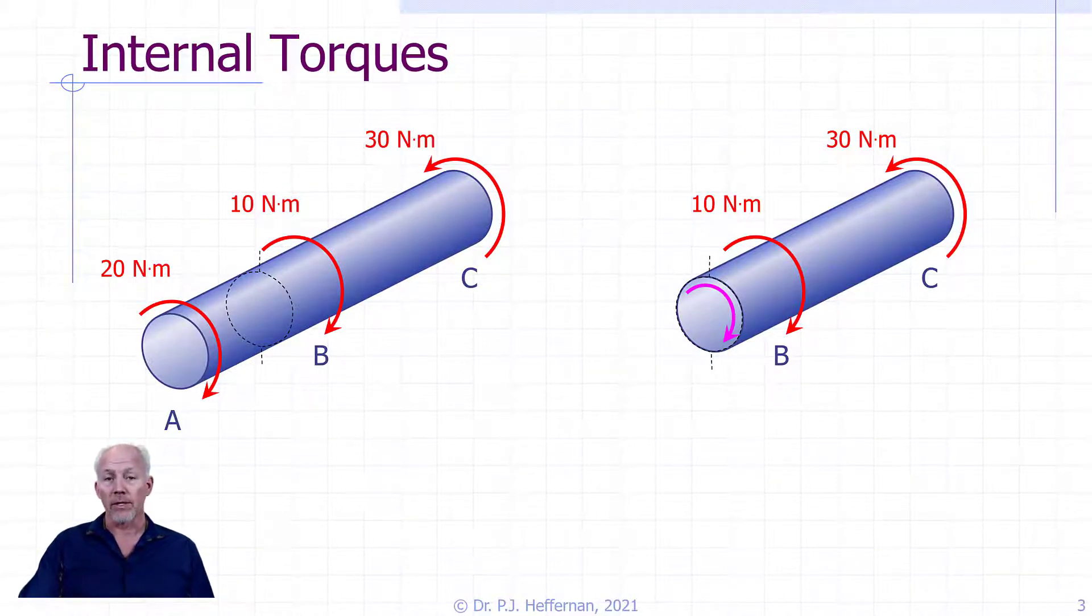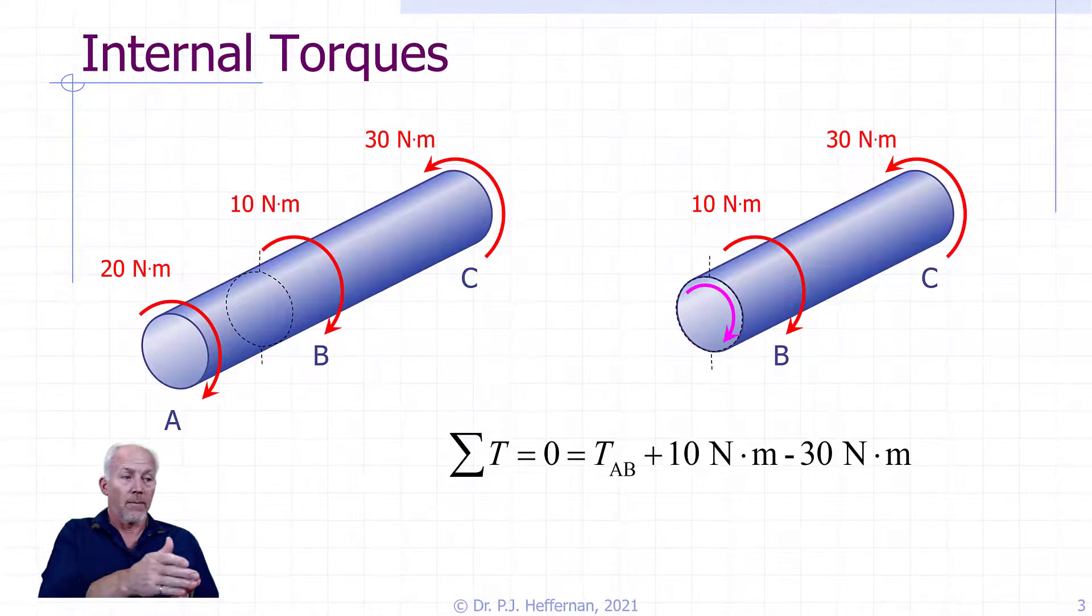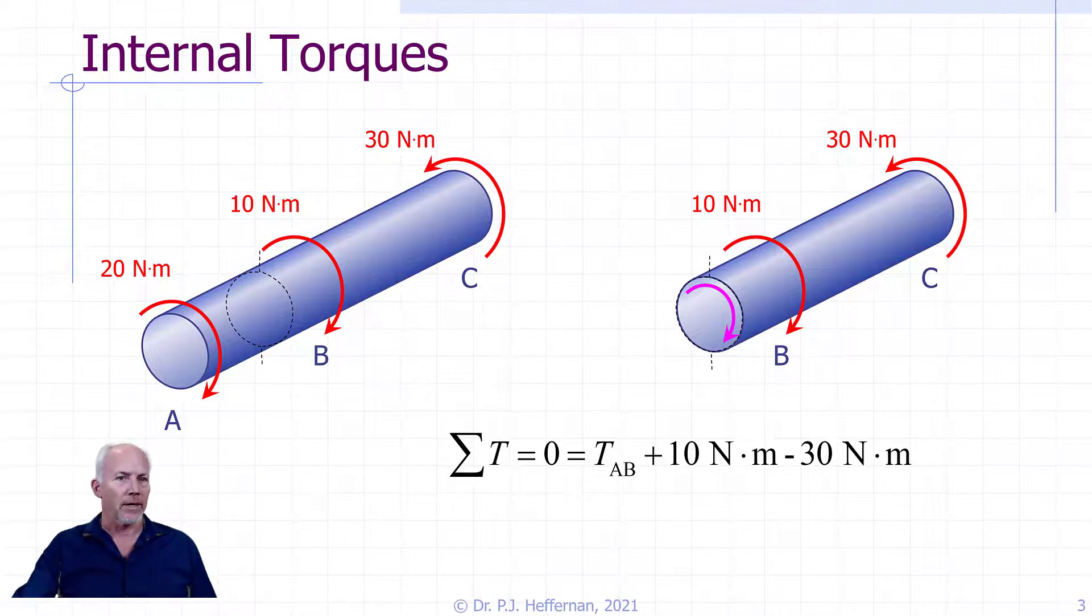The formula that we do is for this simple one-dimensional bar, a sum of the torques about its longitudinal axis must be equal to zero. We can see here that the torque between A and B plus the 10 newton meters minus the 30 newton meters has to be equal to zero, and we can solve for the torque A to B, 20 newton meters. It is identical to what we did with uniaxially loaded rods.